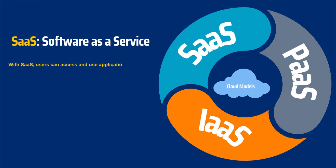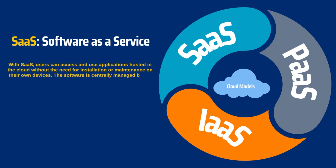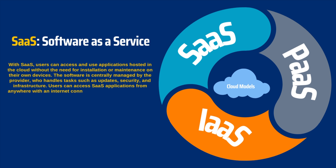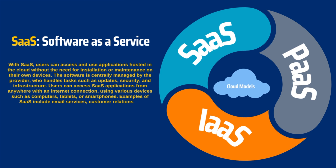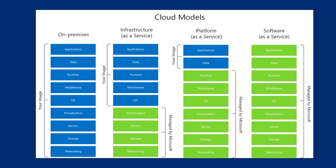The third model is Software as a Service, or SaaS. It is like going to an ice cream parlor and enjoying a ready-to-eat ice cream cone — you just place the order. Software as a Service delivers fully functional applications over the internet, so you don't have to worry about installations or maintenance. It is convenient and perfect for accessing a variety of applications on the go. For example, Microsoft Office 365 is a cloud-based SaaS service.